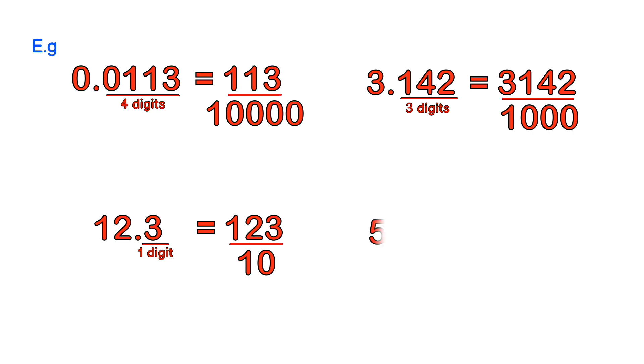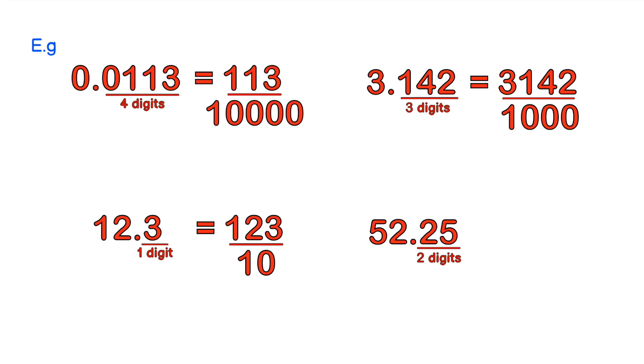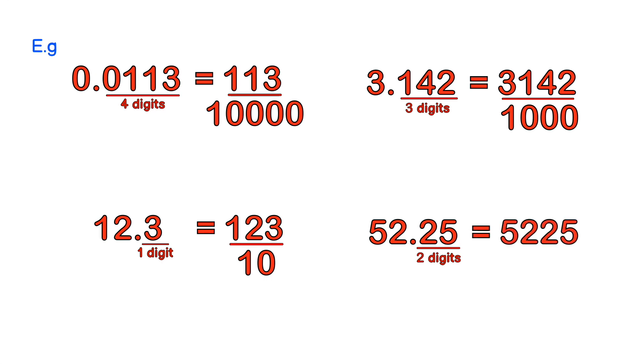Let's take a look at one more example. 52.25. Since there are two digits after the decimal point, this means there needs to be two zeros in our denominator. So it will be 100. Removing the decimal point, we have 5225 over 100. And that's how easy it is.